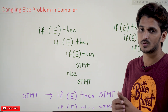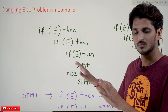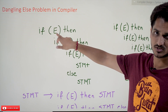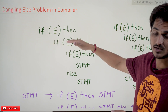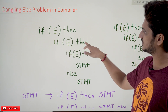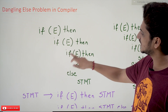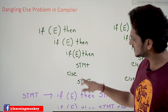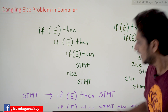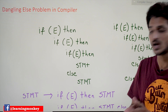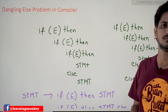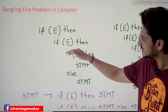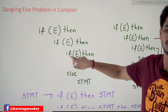Coming to today's class, let's try to understand what the dangling else problem is with an example. In most programming languages, if you write an if statement and inside it you have a nested if statement, and then you write an else statement — this else should be matched to the nearest unmatched if. So this else belongs to the nearest unmatched if.